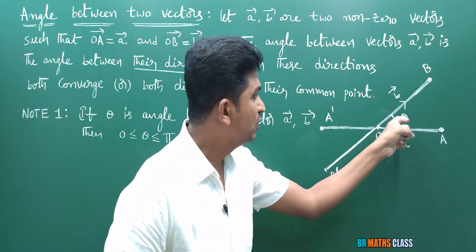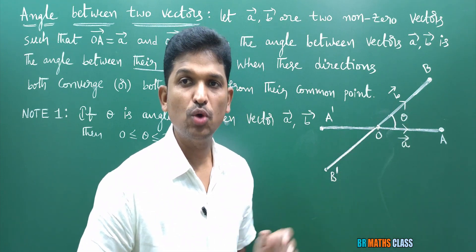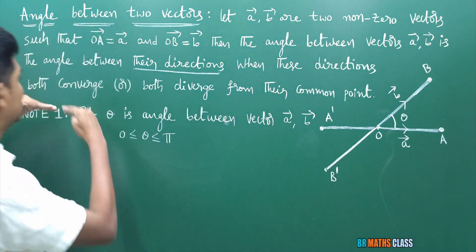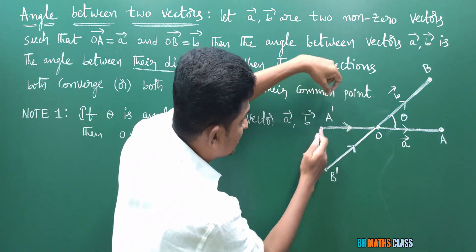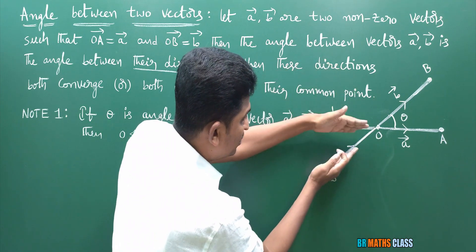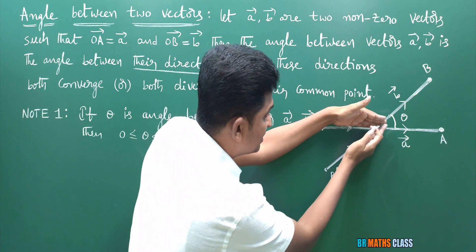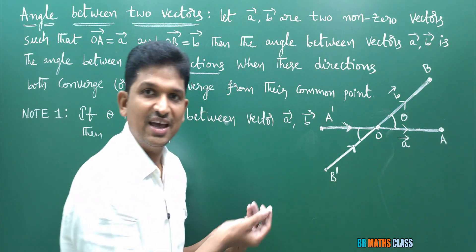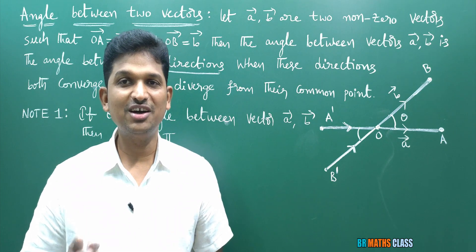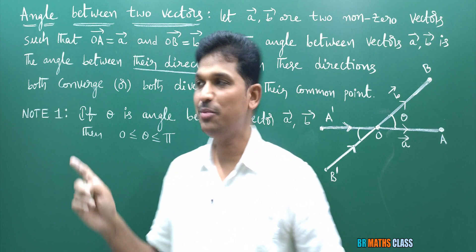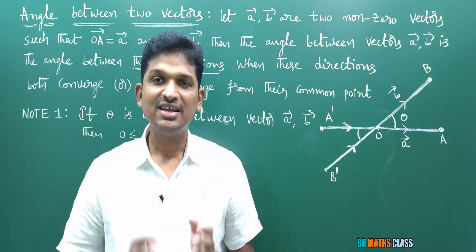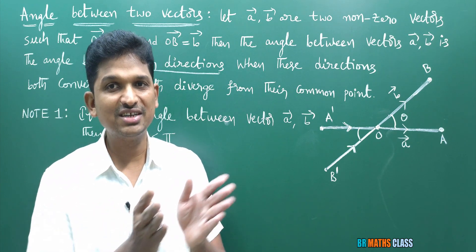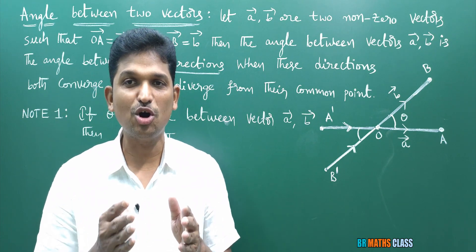As per the definition, the angle between the vectors when both directions are converged is also the angle between the vectors. Observe the direction of vectors A'O-bar and B'O-bar — they are moving towards the common point. Both directions converge to their common point. This angle is also known as the angle between vectors a-bar, b-bar. The angle between a-bar, b-bar is defined as the angle between their directions when both directions are converged or both are diverged from their common point.